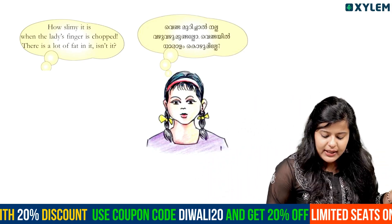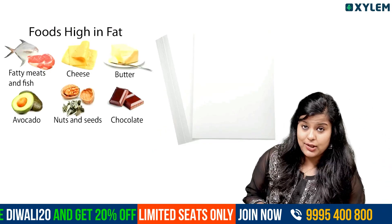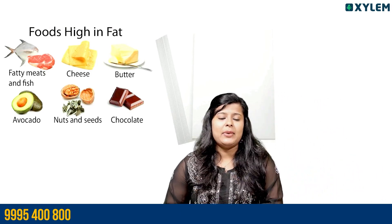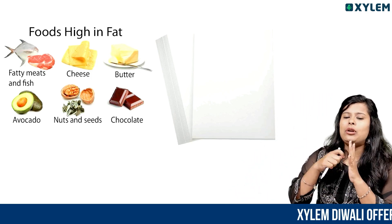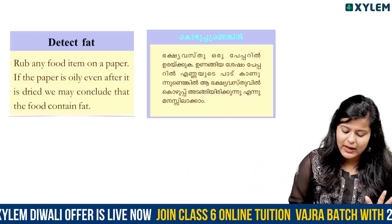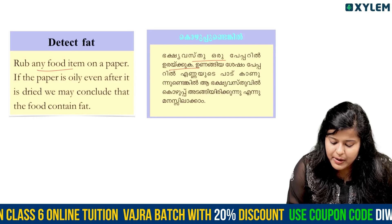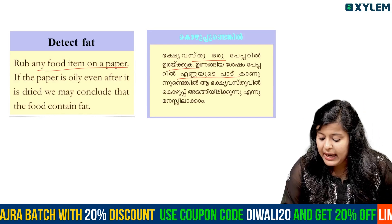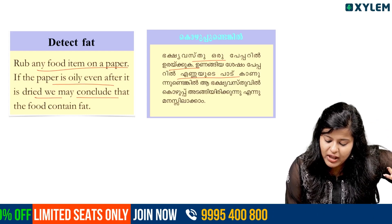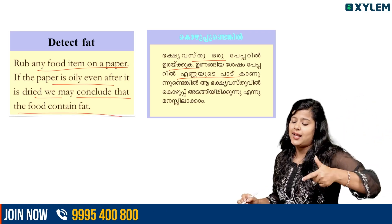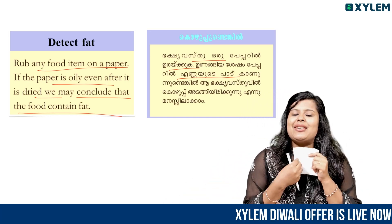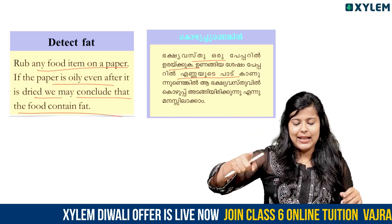To test whether food contains fat, rub the food on paper. If the paper remains oily even after it has dried, we can conclude that the food contains fat. That oily stain on the paper — that tissue — is how we can identify fat content in food.